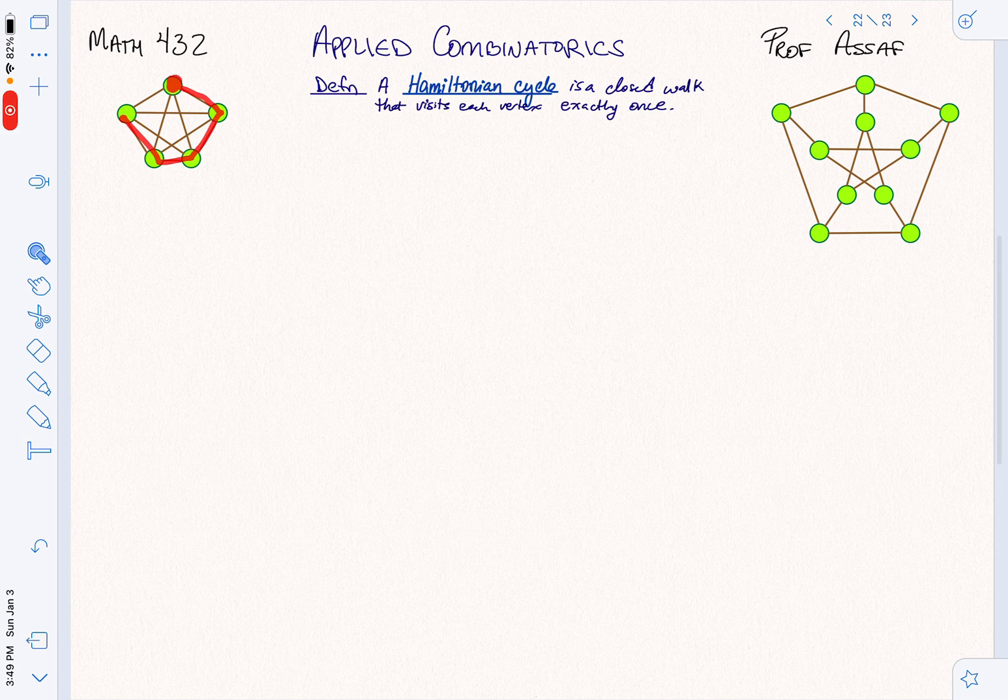Here is a Hamiltonian cycle on this graph. Of course, that's not the only way I could have done it. I could have started here and I could have gone around through this star. That's an equally good Hamiltonian path, or Hamiltonian cycle.